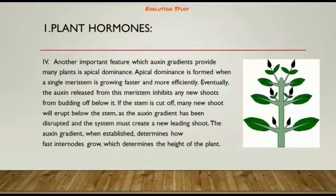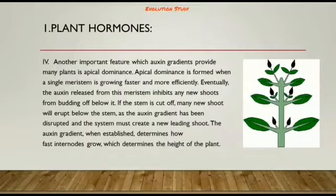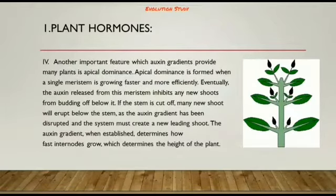Another important feature provided by auxin gradients is apical dominance. Apical dominance is formed when a single meristem is growing faster and more efficiently. The auxin released from this meristem inhibits any new shoots from budding below it. If the stem is cut off, many new shoots will erupt below as the auxin gradient is disrupted, and the plant must create a new leading shoot.